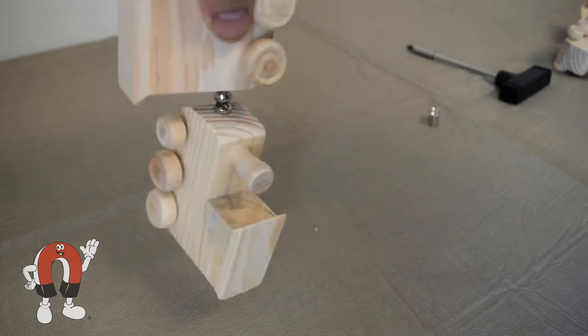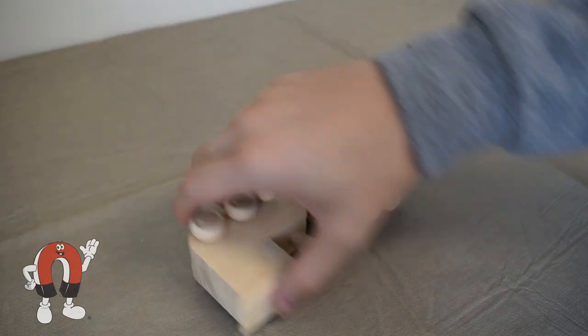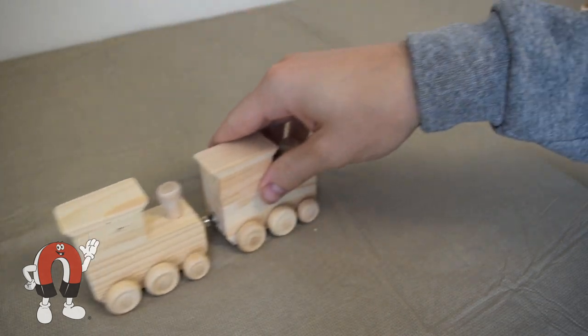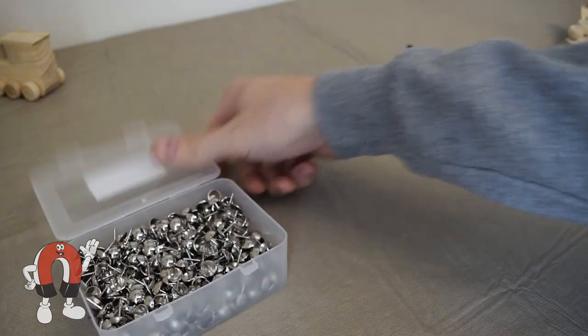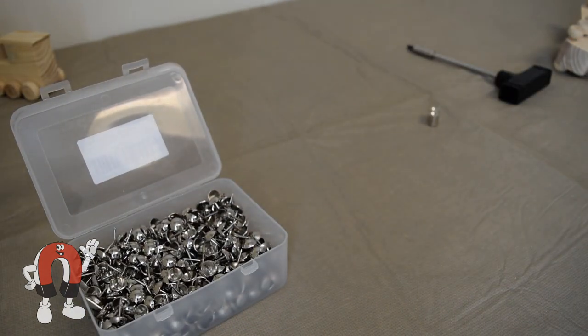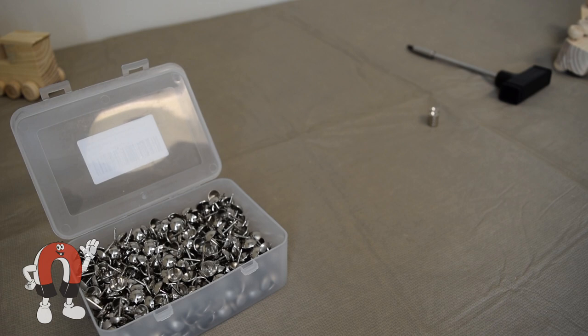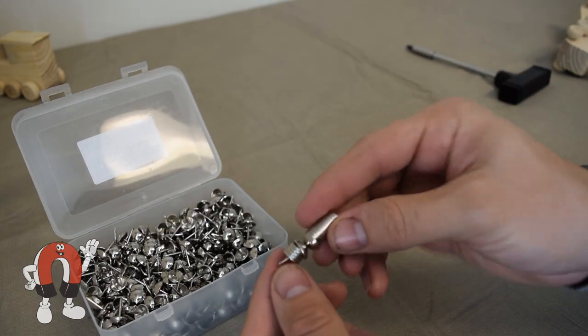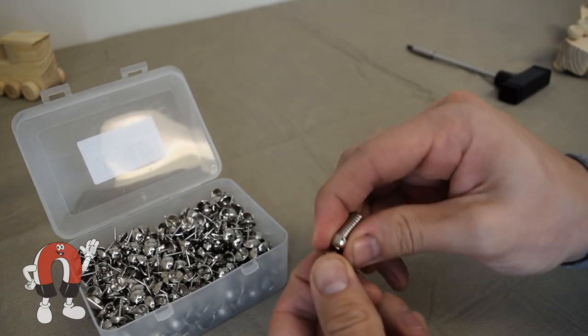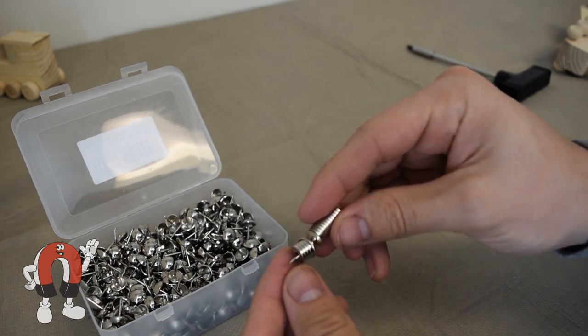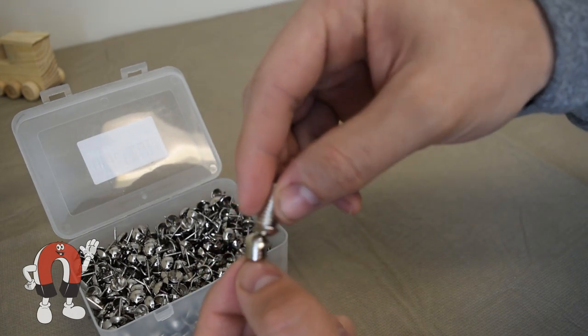While experimenting with this we actually had a customer email us who was trying to make a similar thing. He had the great idea of using some upholstery tacks with a magnet set underneath the head. This provides a firm hold, allows for turning and also has a clean look. We found our winner thanks to our awesome customers. Let's build it.